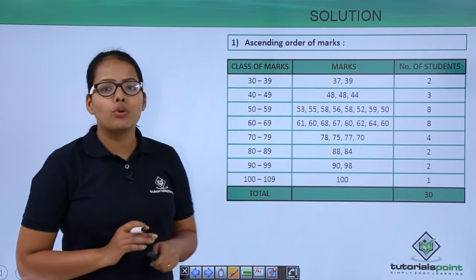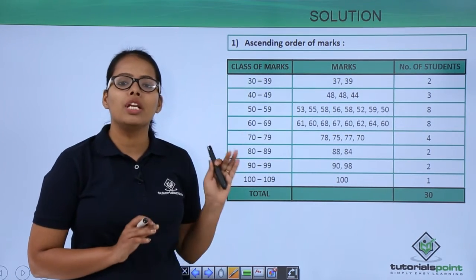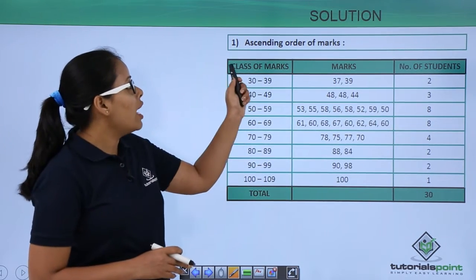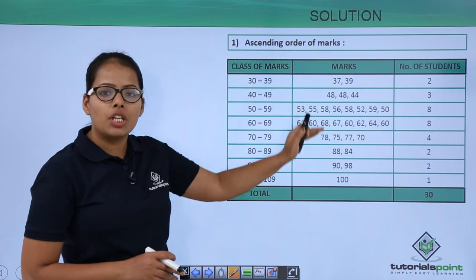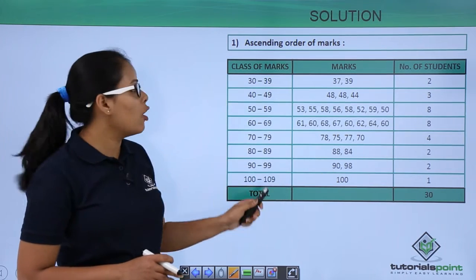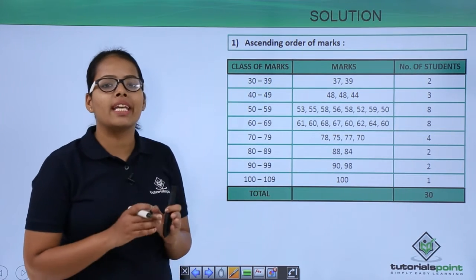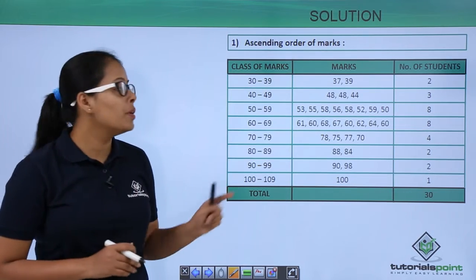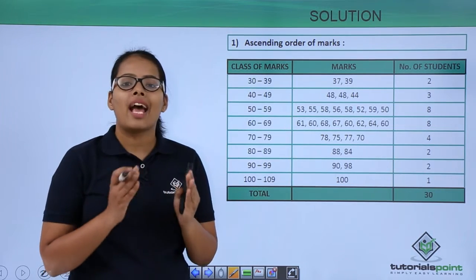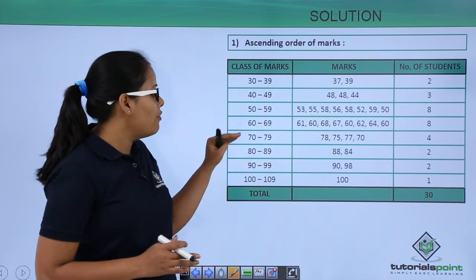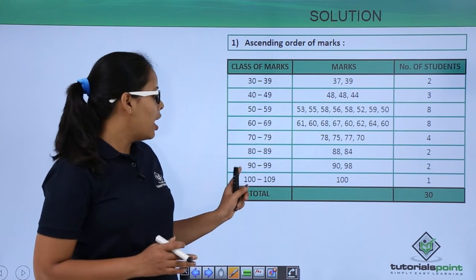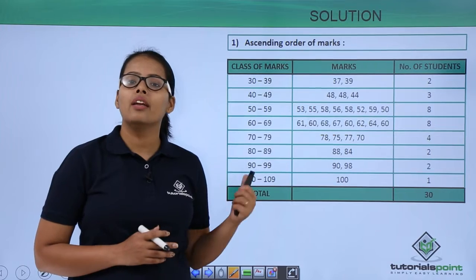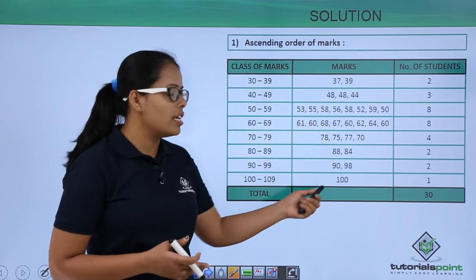For the first problem, you need to arrange the data in ascending order. We have arranged the data by grouping it into class intervals: 30 to 39 as one group, 40 to 49 as the second group, and so on, continuing until 100 to 109, because the maximum marks in this paper is 100.